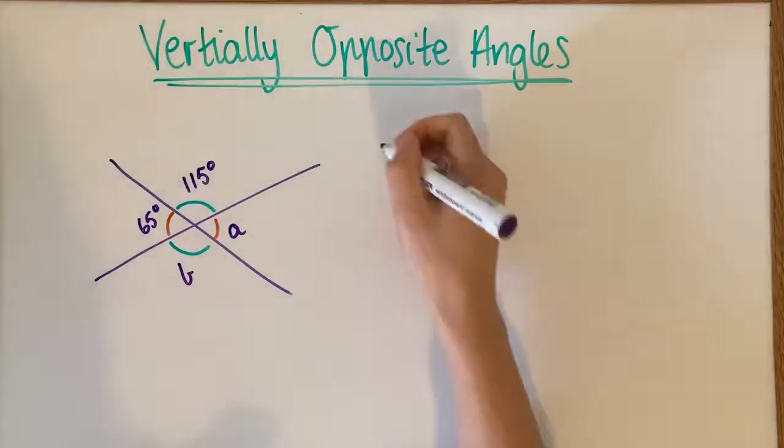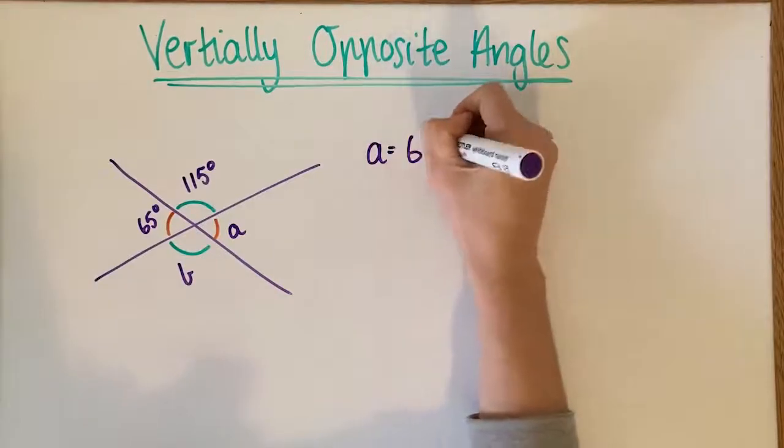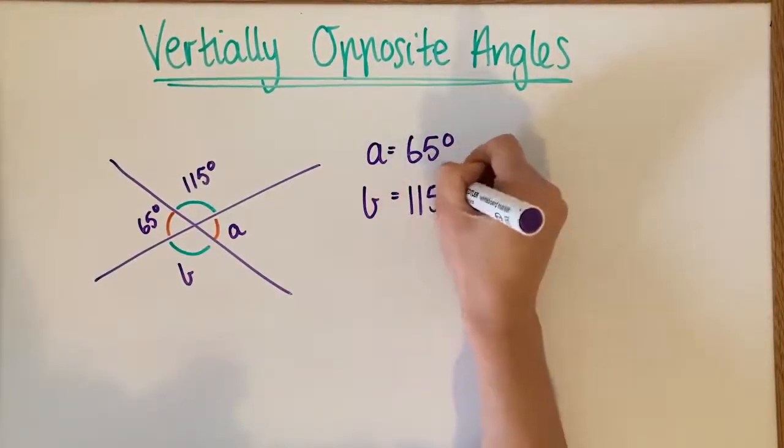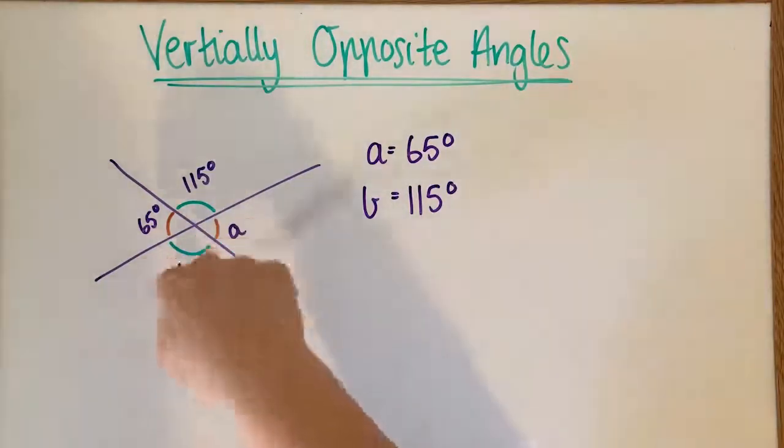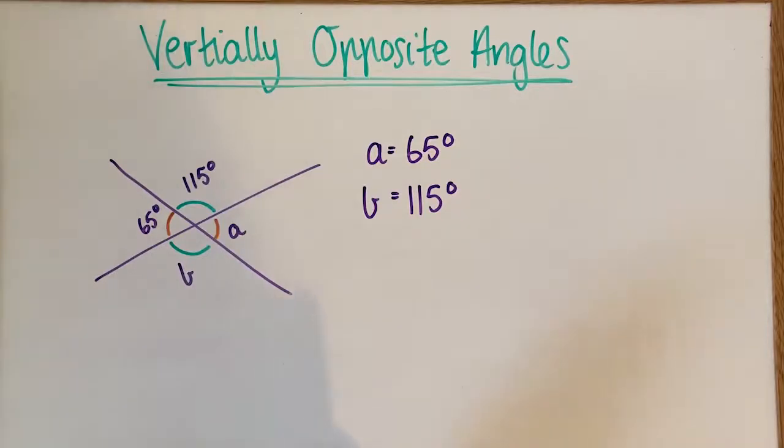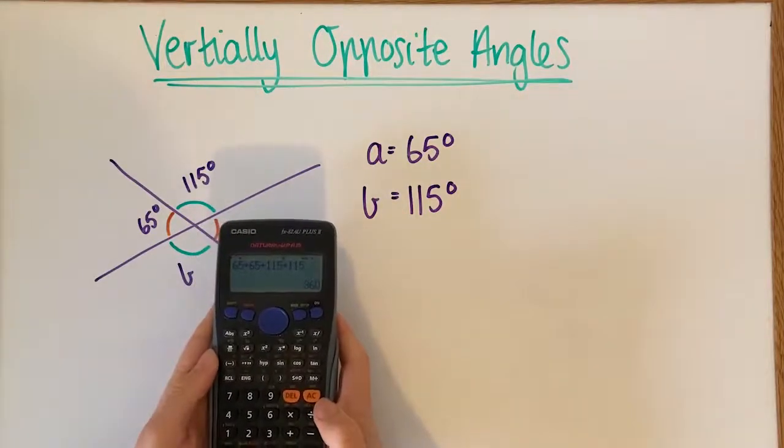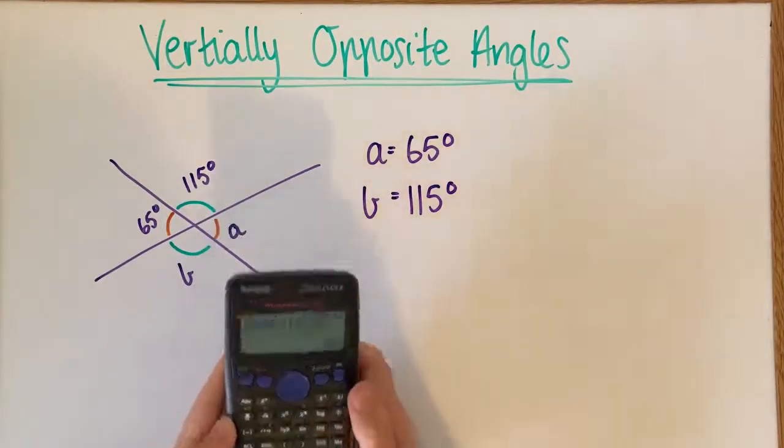So I could say that A is going to be 65 degrees and B is going to be 115 degrees. And a way to check if I'm correct, because this together makes a revolution, together they should all equal 360 degrees if I was to add all those numbers together. And that's how I can check I've done it correctly.